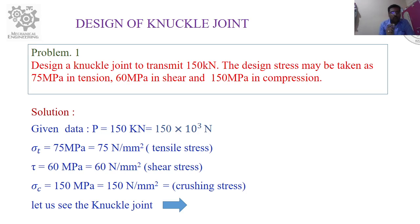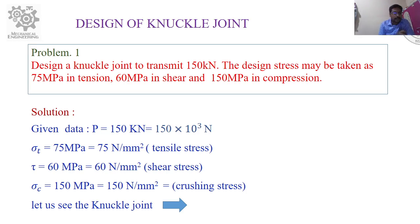Given data: P = 150 kN = 150 × 10³ N. Tensile stress σt = 75 MPa = 75 N/mm². Shear stress τ = 60 MPa = 60 N/mm². Crushing stress σc = 150 MPa = 150 N/mm².